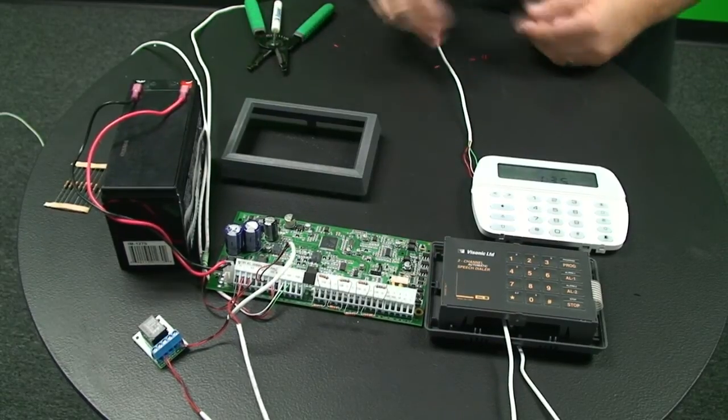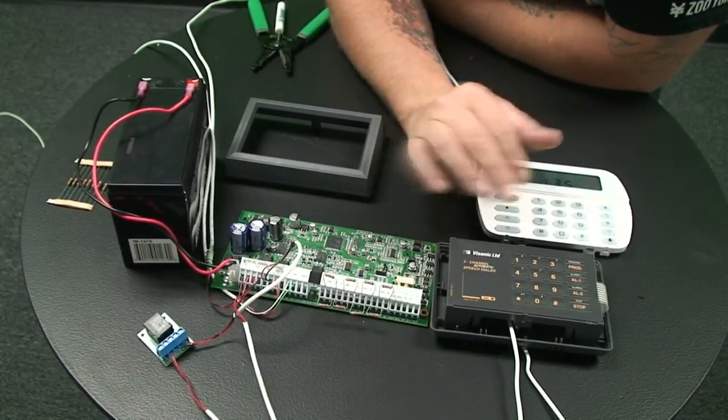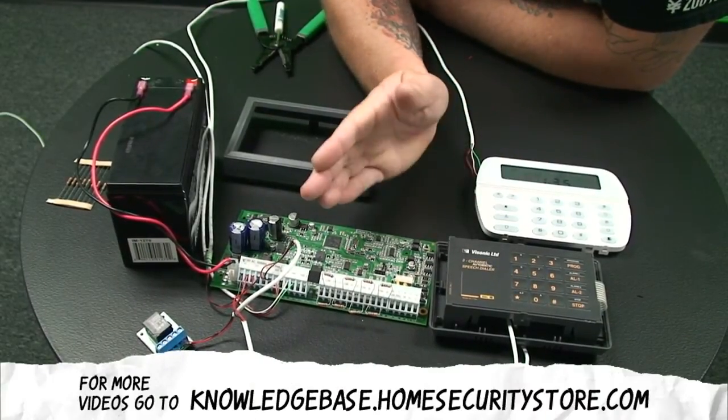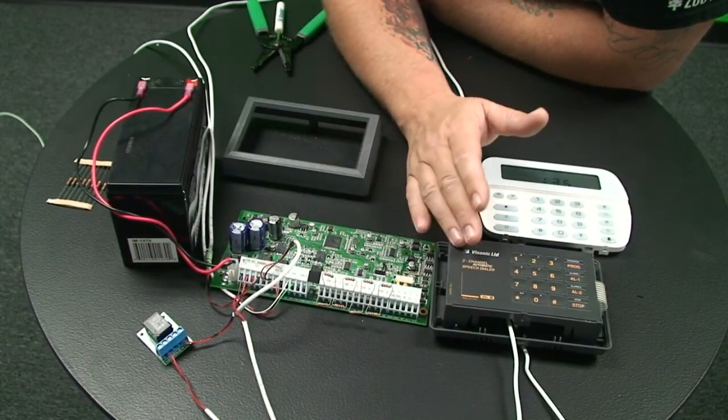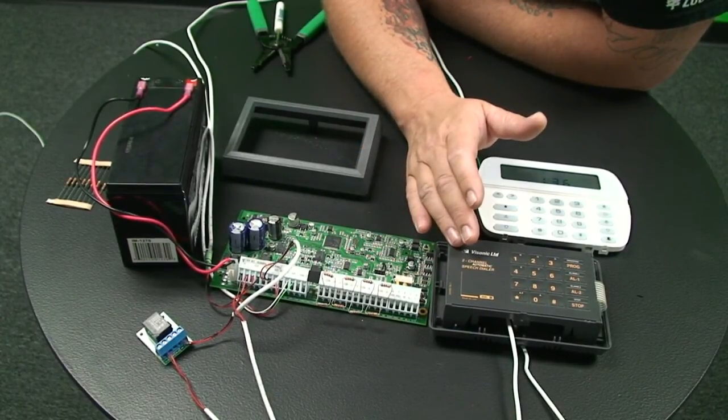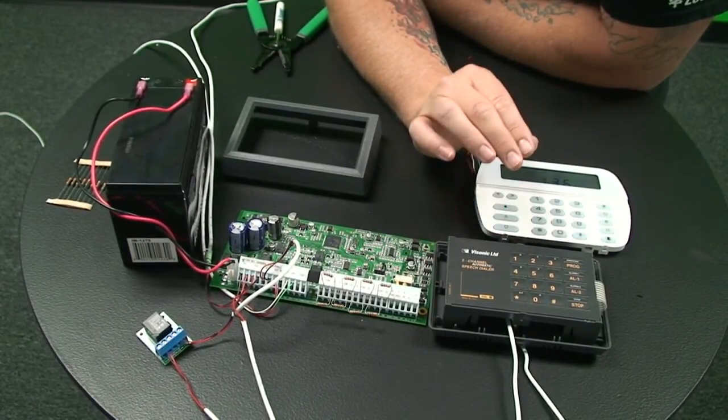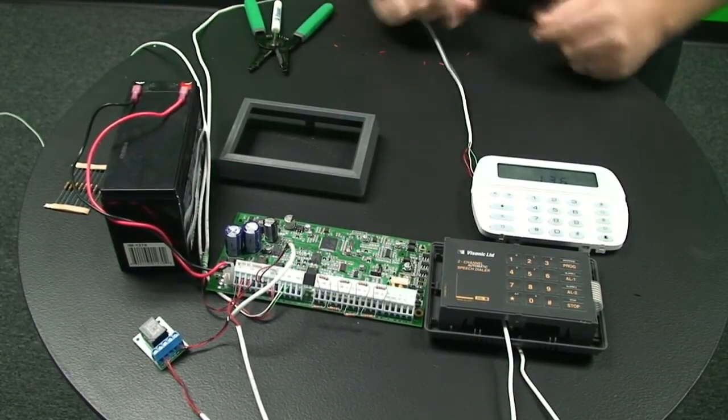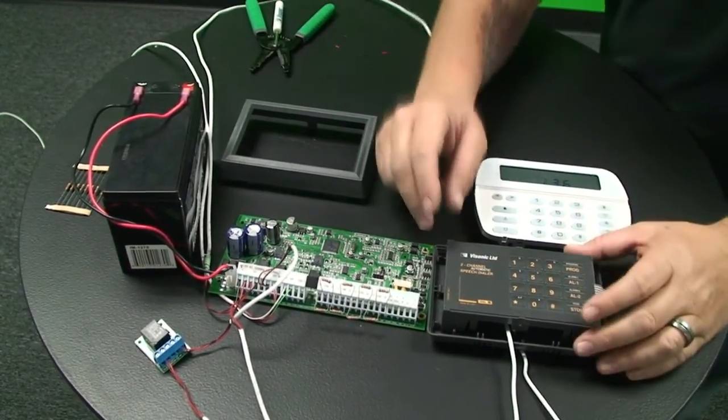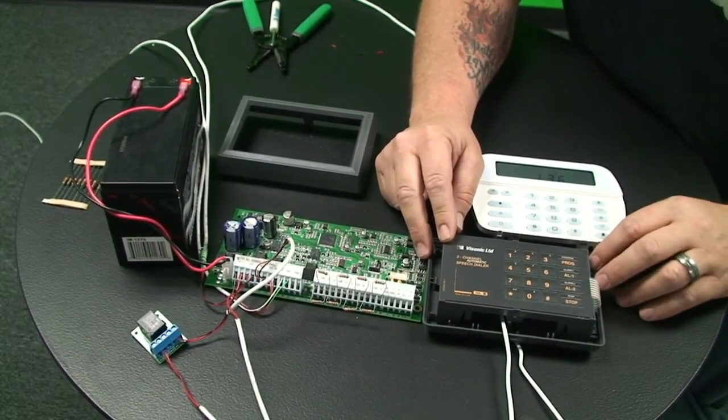And now, there's not much to program, providing that your panel's already been programmed. So the only things that we have to program is the bell circuit on the DSC panel is already ready to go. So all we have to program is the dialer telling it where we want to call. So this dialer can program with the four phone numbers. And when you're programming your phone numbers, you're going to need to make sure that they're programmed in exactly as if you were to pick up the phone and call it from your location.